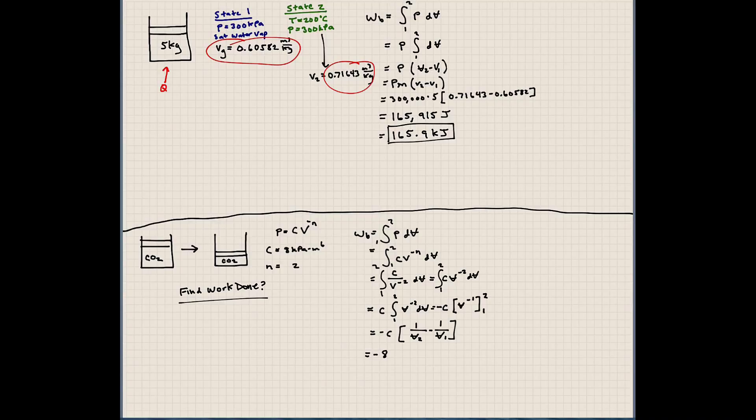Plugging in our values here, we have minus 8 times 1 over 0.1 minus 1 over 0.3. Well, it would help if I told you guys what the volumes are here. I don't think I told you that. So assume that the initial volume is 0.3 - we can plug in any value, really, but I'll use these. Our initial volume is 0.3 and our final volume is 0.1 meters cubed. So carrying out this, we can come up with the answer of minus 53.3 kilojoules.